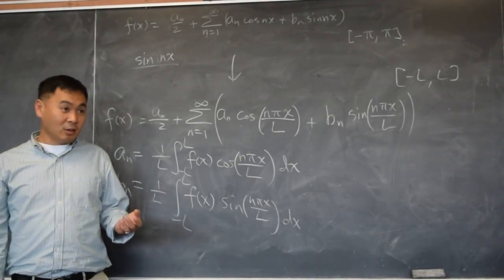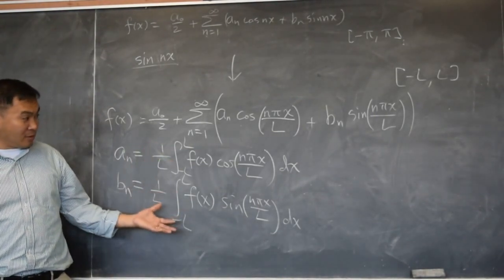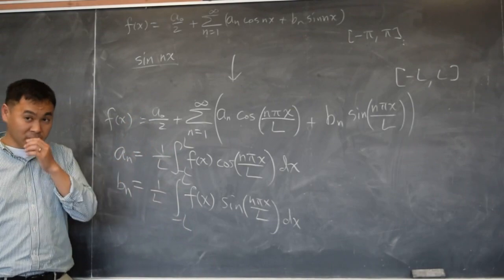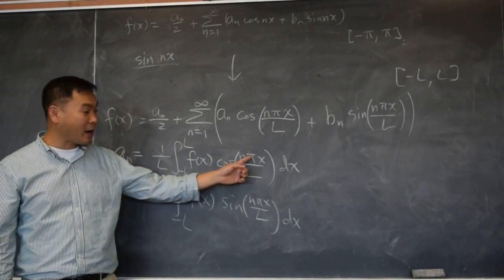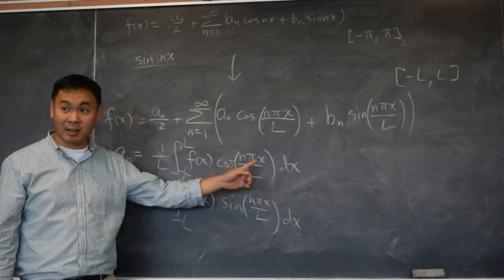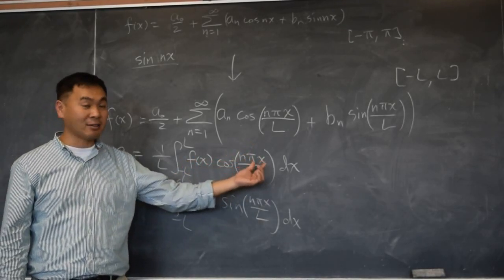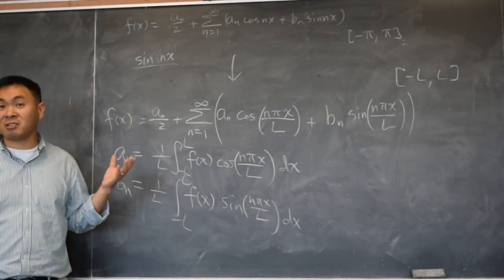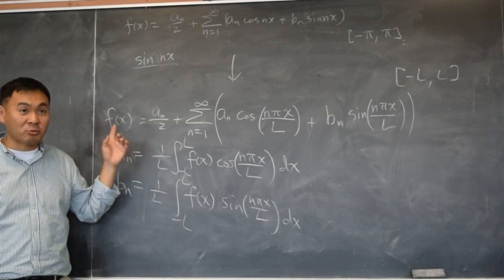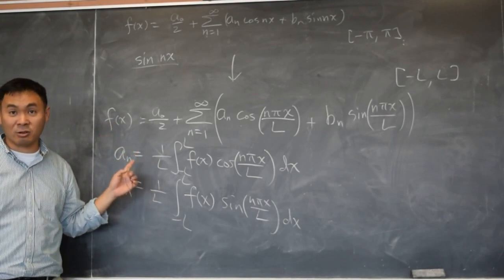So in fact, to see that this is the same thing as before for negative pi to pi, just make L as pi. What happens? If this is pi and L is also pi, pi pi cancels, right? So you get f x times cosine n x from negative pi to pi, one over pi. So it matches exactly as the old formula for the special case when L is equal to pi.